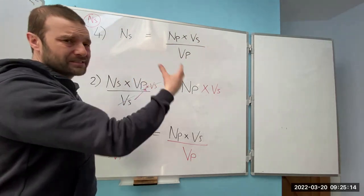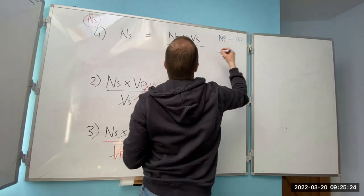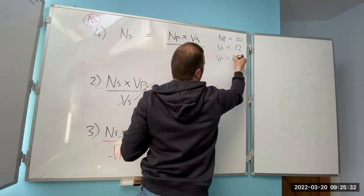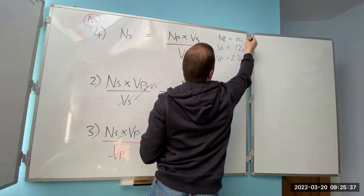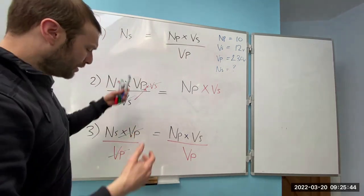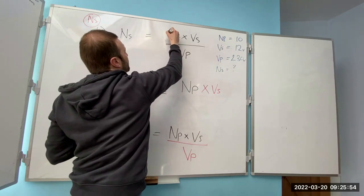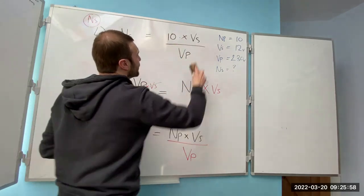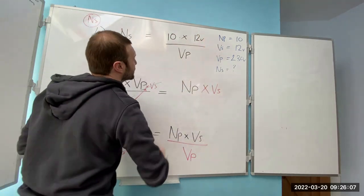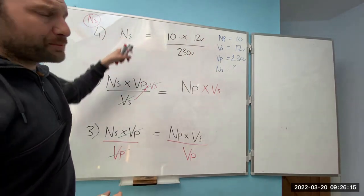What you would now do is put in the numbers. For instance, if Np equals 10, Vs equals 12, and Vp equals 230, we would put those numbers into the formula: Ns equals 10 times 12 divided by 230, and then we'd be able to calculate Ns.